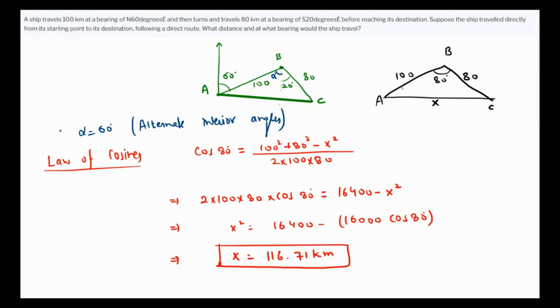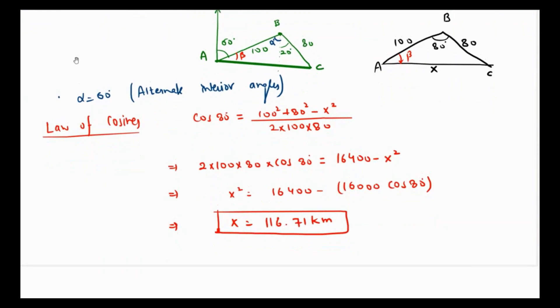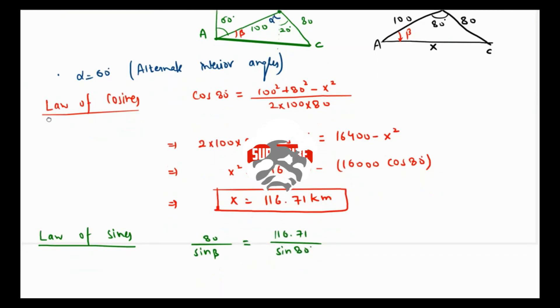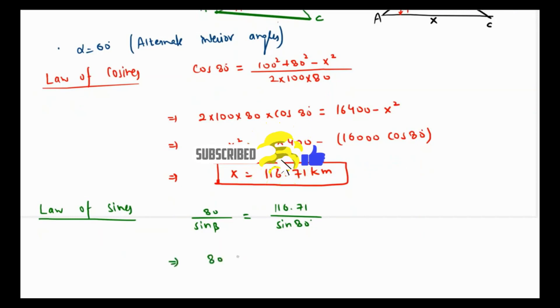For the angle, let's use law of sines. We'll find this angle beta. 80 over sine of beta is going to be this opposite pair, which is x over sine of 80 degrees. That's 116.71 over sine of 80 degrees. If we cross multiply, 80 sine of 80 degrees over 116.71 equals sine of beta degrees.